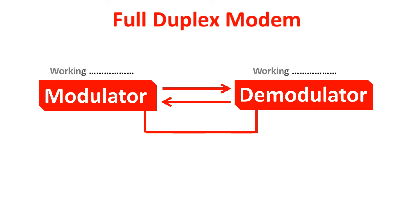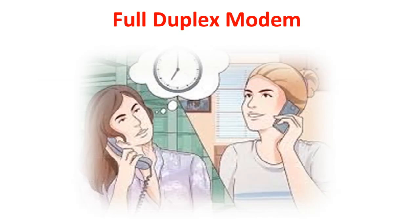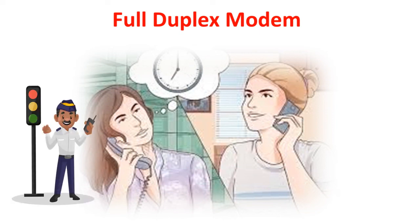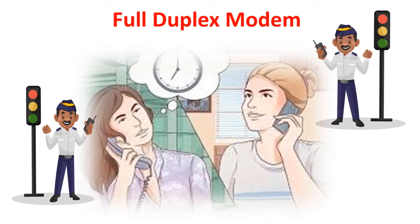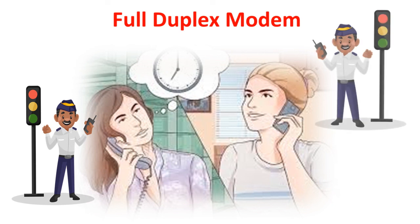In a half-duplex modem, the other process has to wait unless the current operation is fully completed. The example of a full-duplex modem is a telephone call, where both parties can communicate at the same time across different parts of the world. This is in contrast to a walkie-talkie conversation, where two parties wait for their turns to speak to each other.